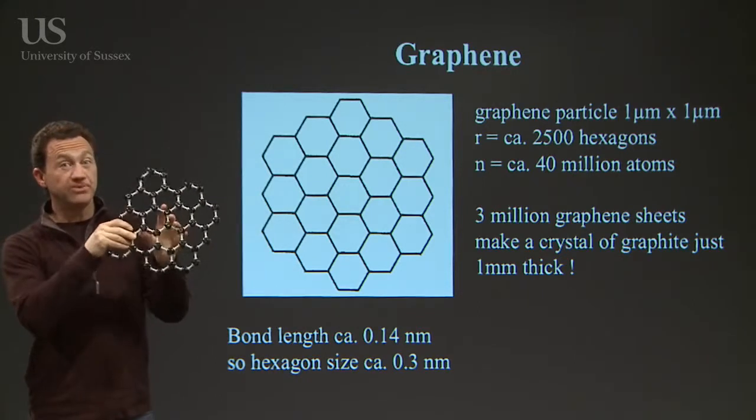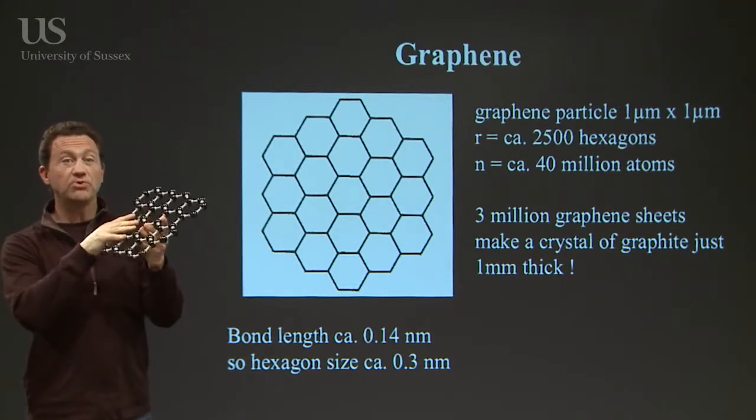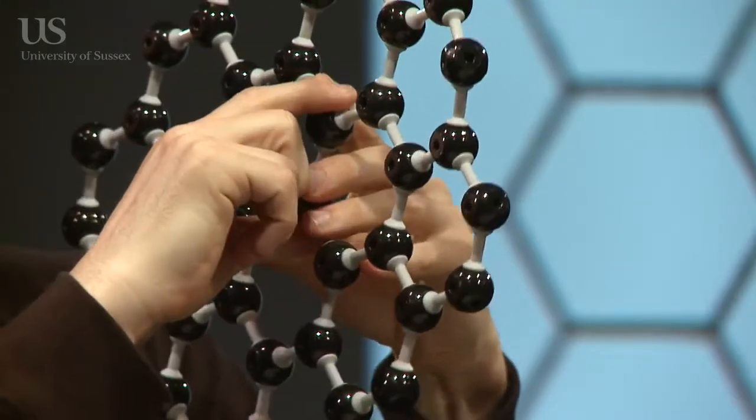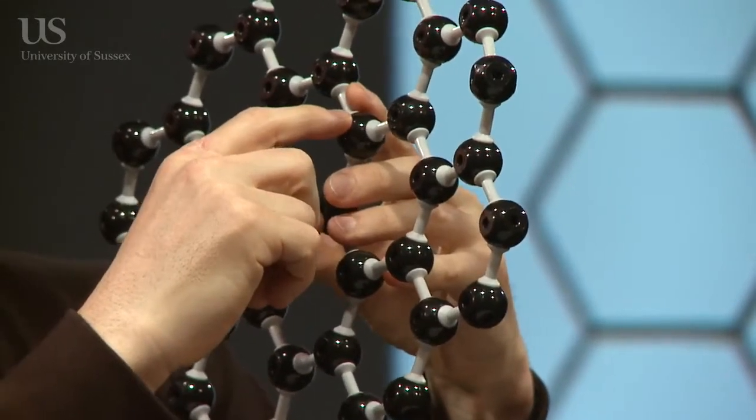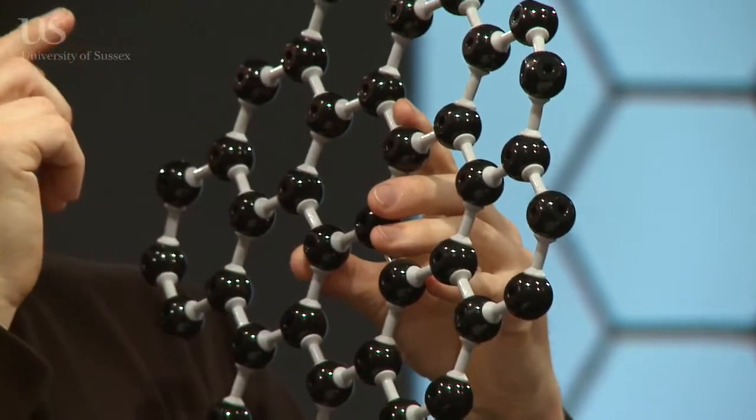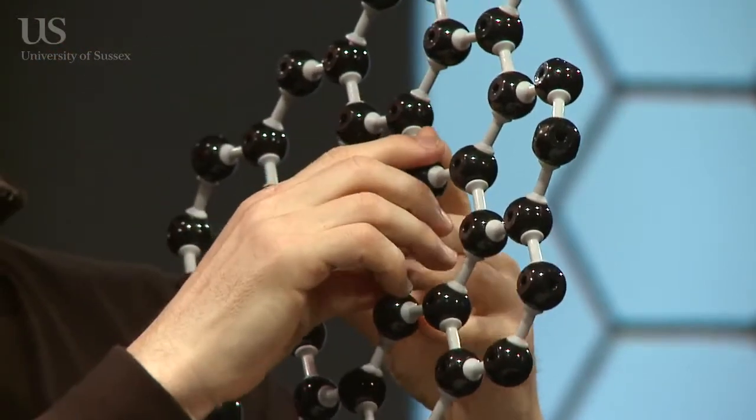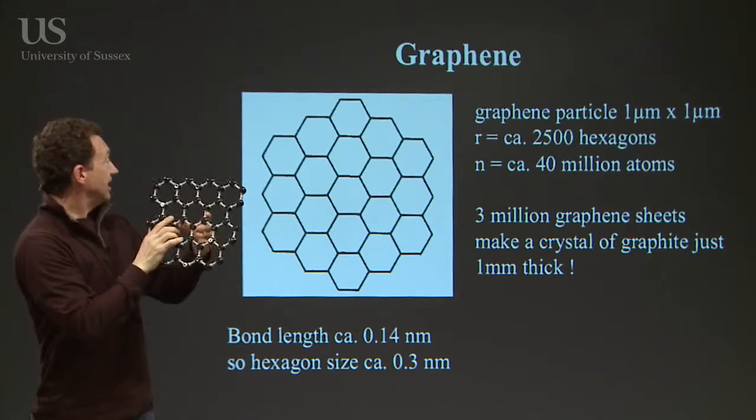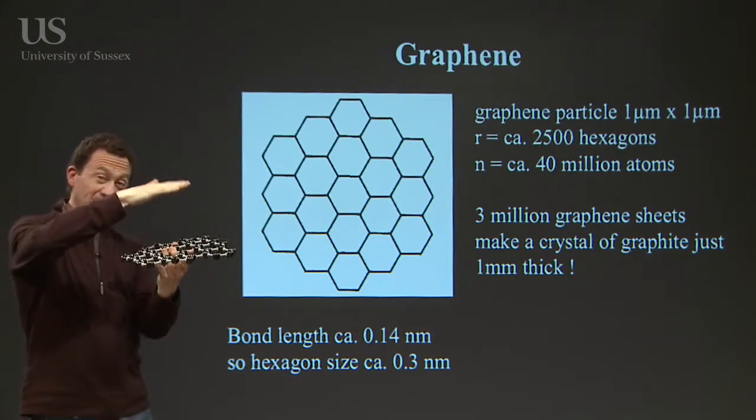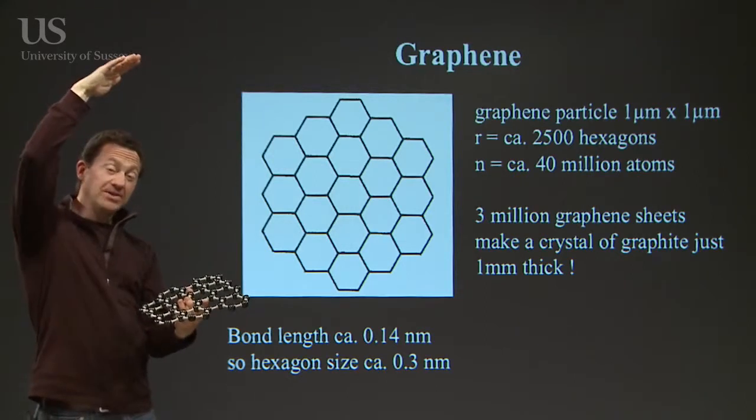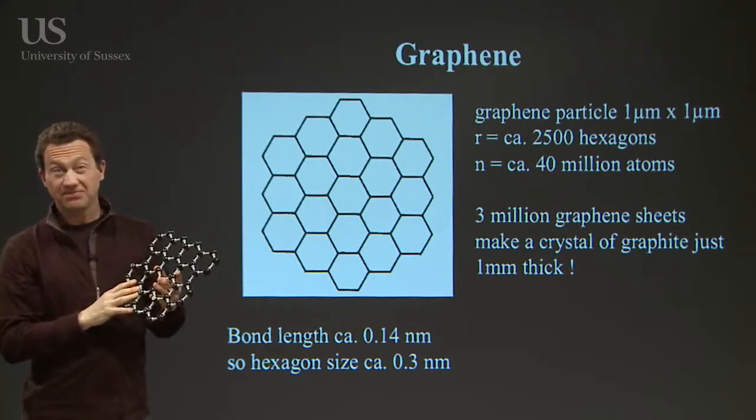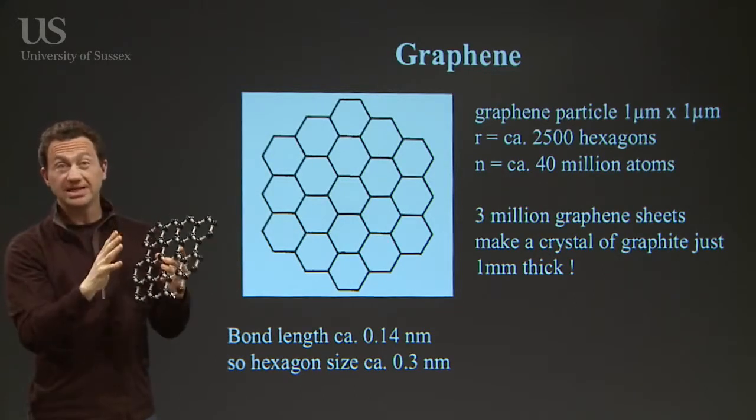It has some very interesting properties. Just to remind you how small these things are, the bonds are less than a nanometer from one atom to the other. So that's less than a thousandth of a millionth of a meter. And of course the atoms come together to form sheets. Three million graphene sheets, one on top of the other to form a crystal of graphite, would only be one millimeter thick. So we forget how small these things are.